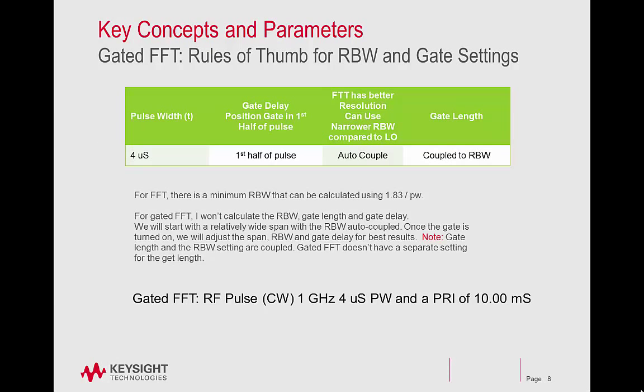Gated FFT: Rules of Thumb for RBW and Gate Settings. For FFT, there is a minimum RBW that can be calculated using 1.83 divided by the pulse width. For this demonstration, I won't calculate the RBW, gate length, and gate delay.